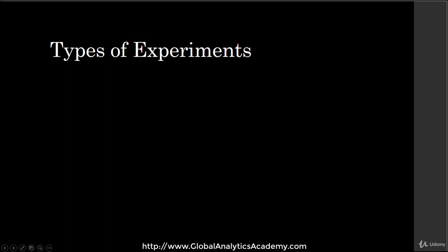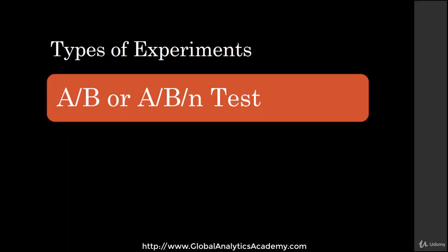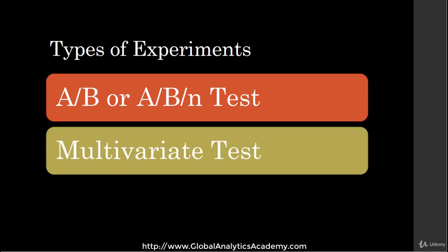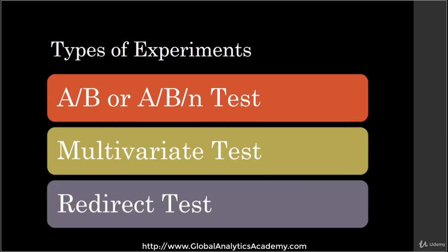There are three types of experiments that you can conduct in Google Optimize: A/B test, also known as A/B/N test, multivariate test, and a redirect test.